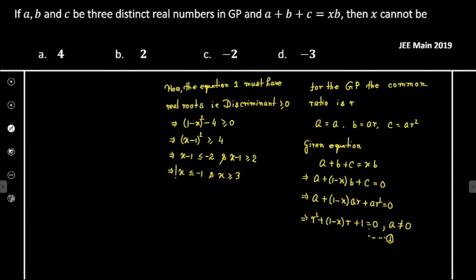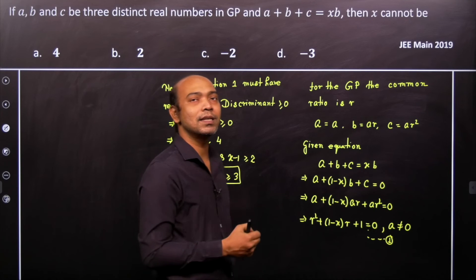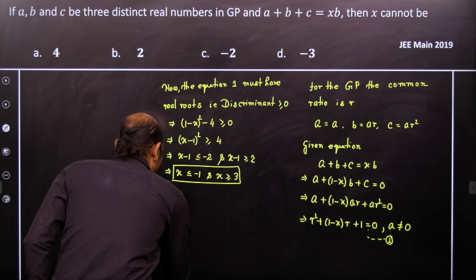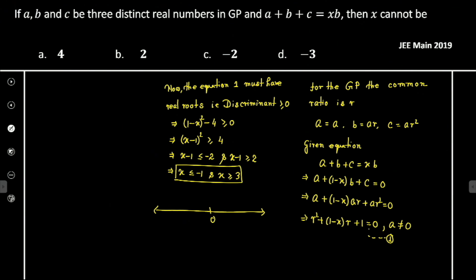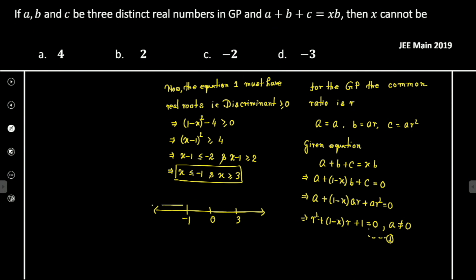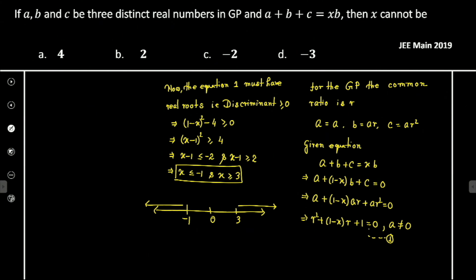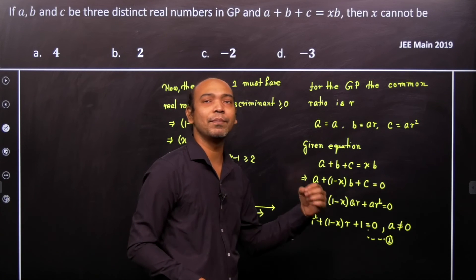This is the region where x must lie for the solution to be real. Let us plot this on a number line. Let's go ahead and draw a number line where we mark 0 somewhere, mark 3 here, and mark -1 here.